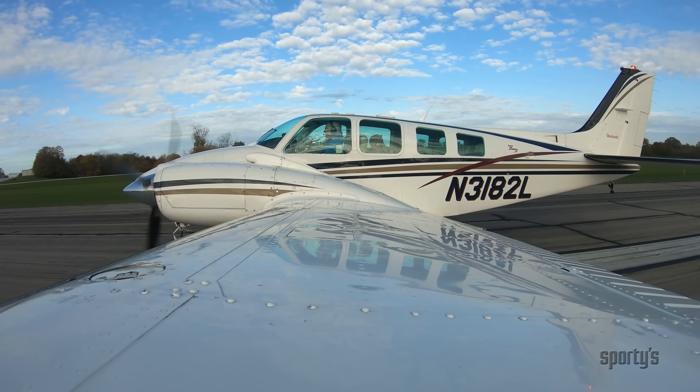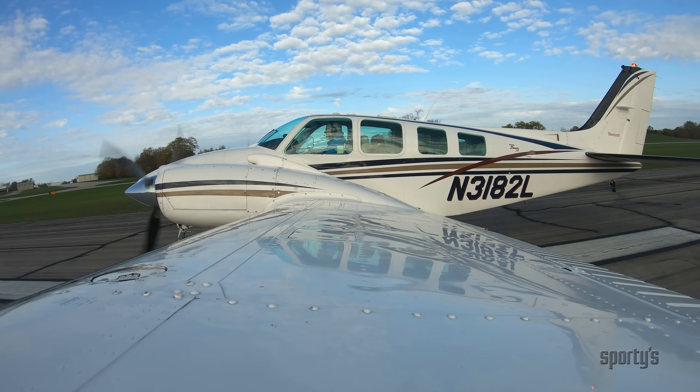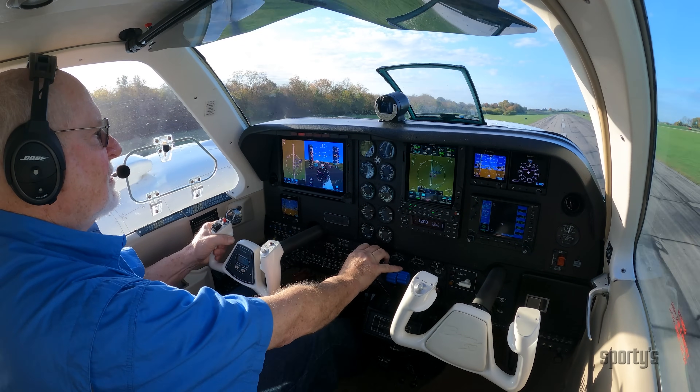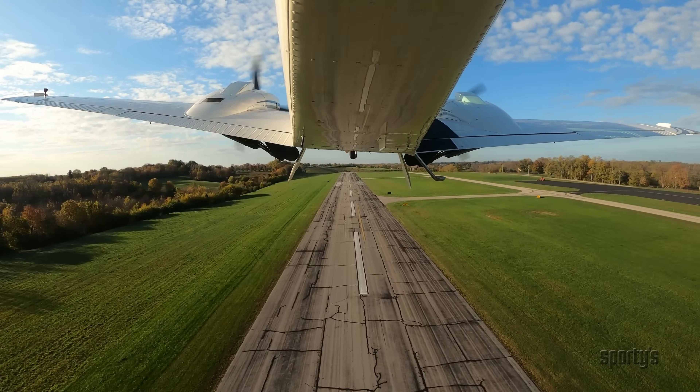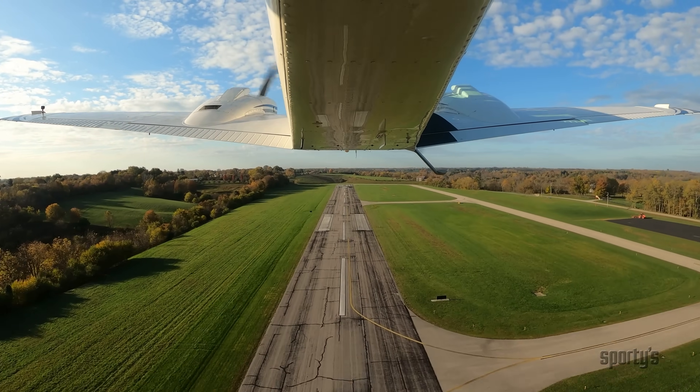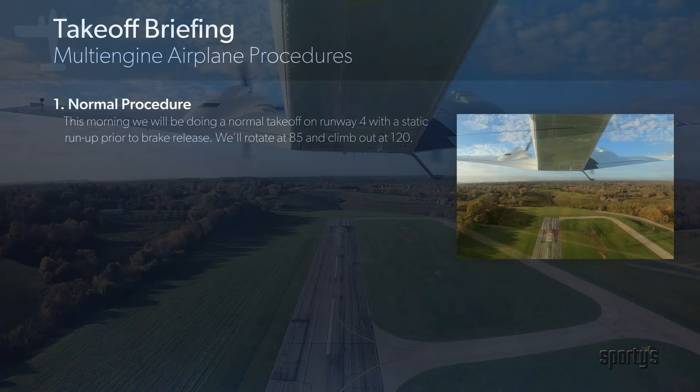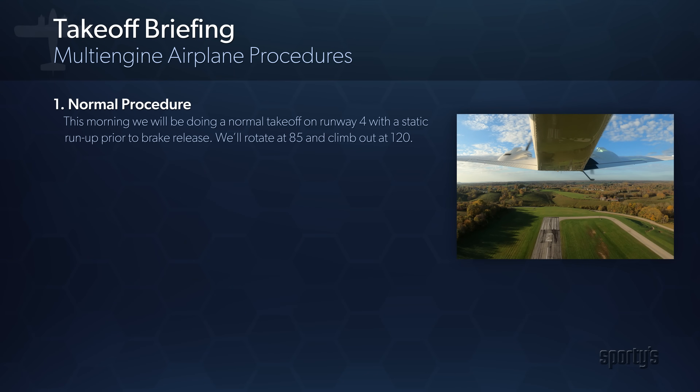Every takeoff should be preceded by a takeoff briefing. During this briefing, you are telling yourself and your instructor what decisions you have made about the takeoff. This briefing is a statement of your emergency plan so it can quickly be put into action if needed. The decisions you make may be critical to a successful outcome in the event of an emergency. The information presented here is a potential thought process for a light twin. It is not definitive — your airplane and the conditions may warrant different decisions.